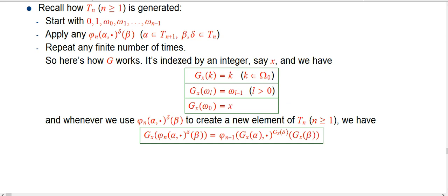I should say G x, just to make it clear, G x goes from omega n plus 1 to omega n. It takes something in a certain tree ordinal class and then takes it to the smaller class.